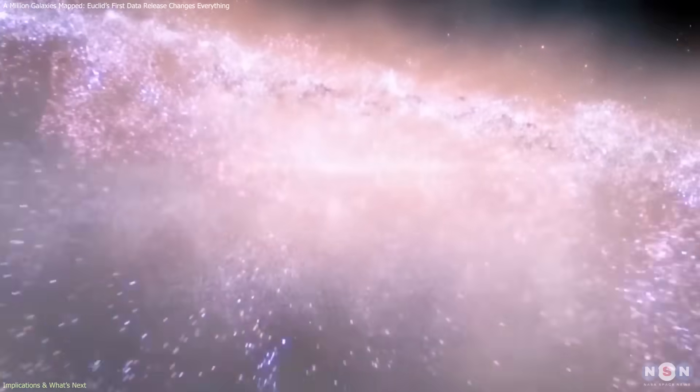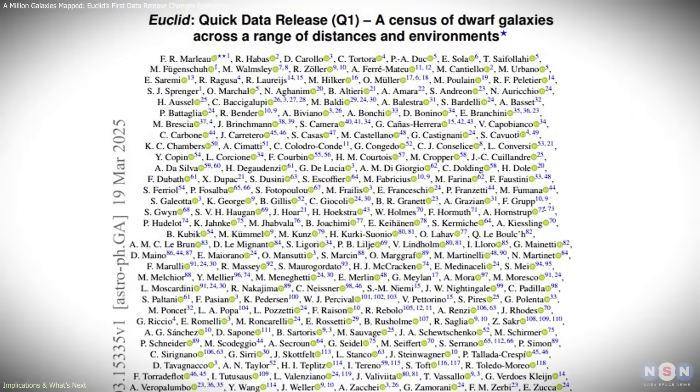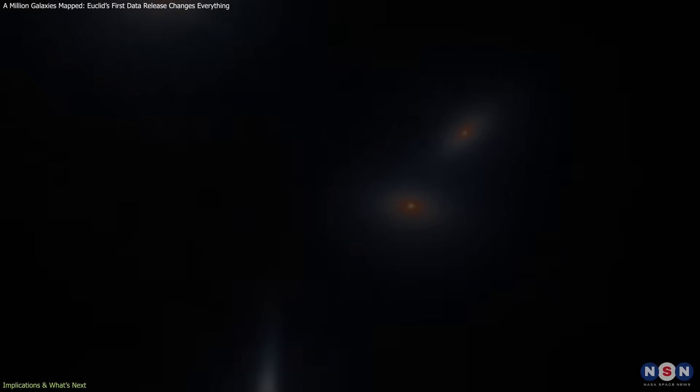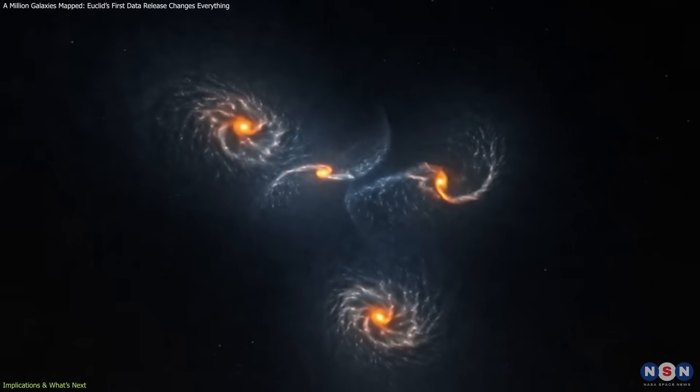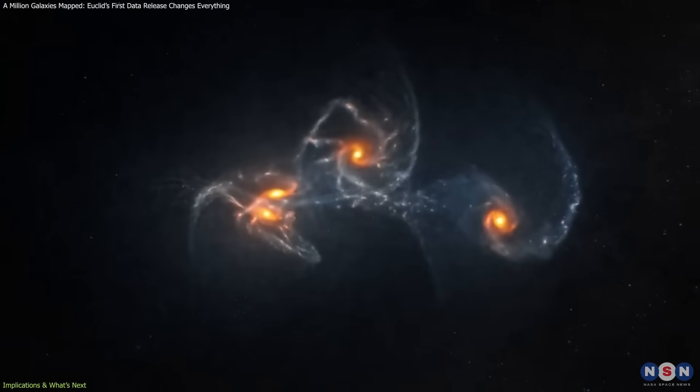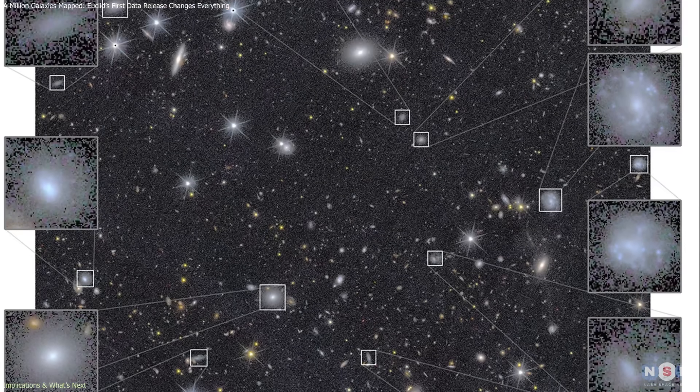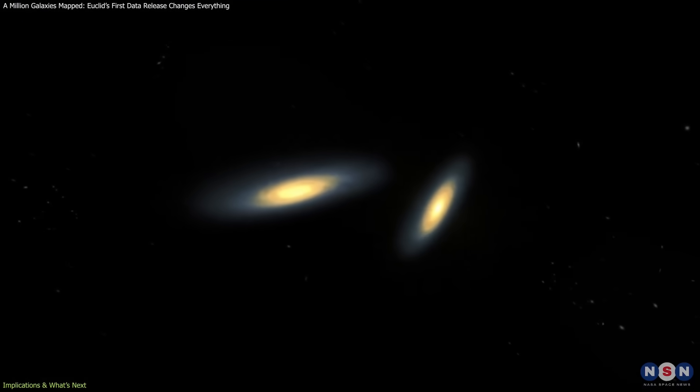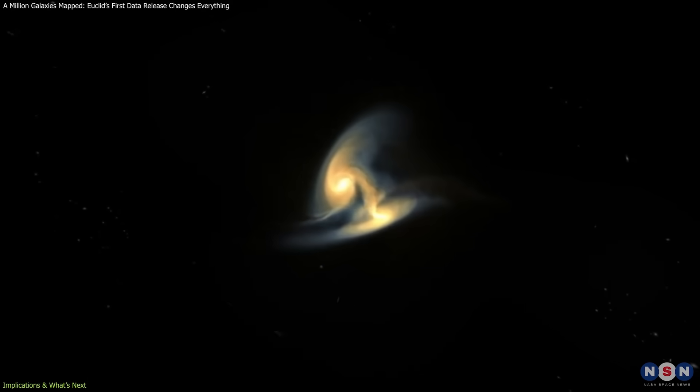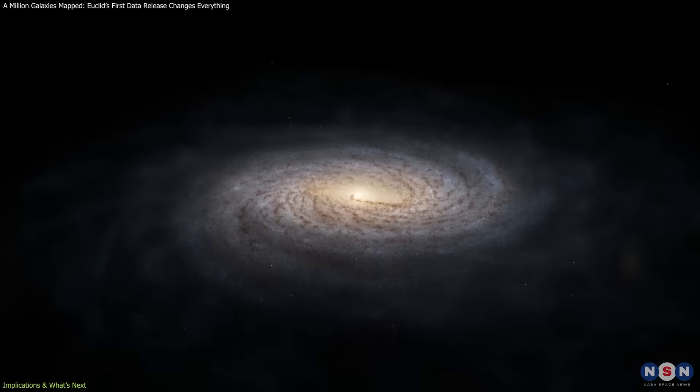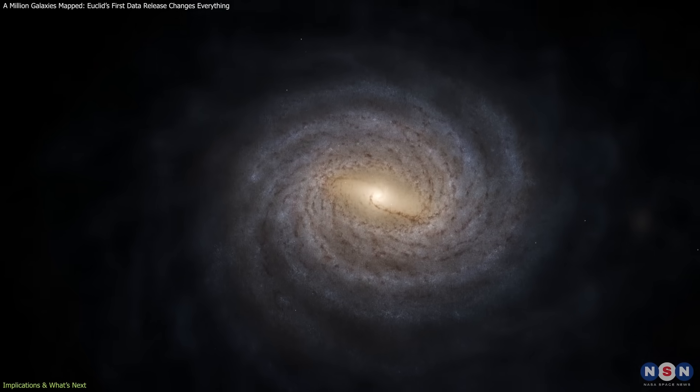The dwarf galaxy results will likely become one of Euclid's most influential contributions. Because dwarfs react strongly to gravitational interactions and environmental effects, their shapes, colors, and internal structures can reveal how early galaxies formed and how frequently they were disrupted or absorbed. Euclid's ability to detect them consistently across large volumes will help resolve long-standing questions about how many dwarfs contributed to the growth of galaxies like the Milky Way.